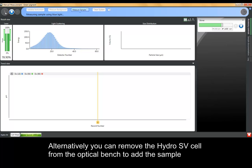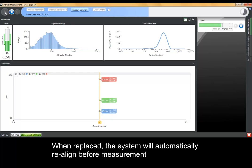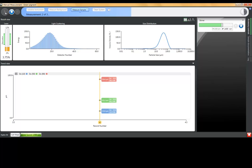As an alternative to the pipette access, you can remove the Hydro SV cell from the optical bench to add your sample. Then when the cell is replaced, the system will automatically realign before starting the measurement.